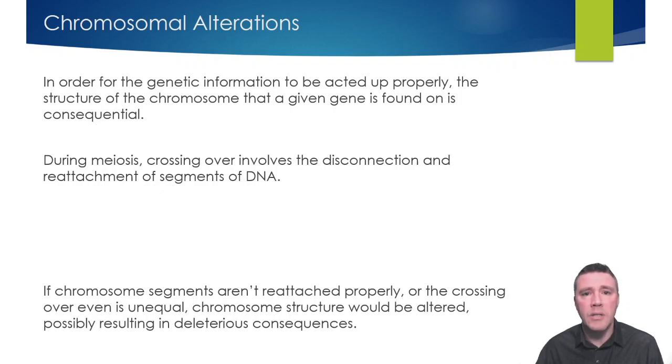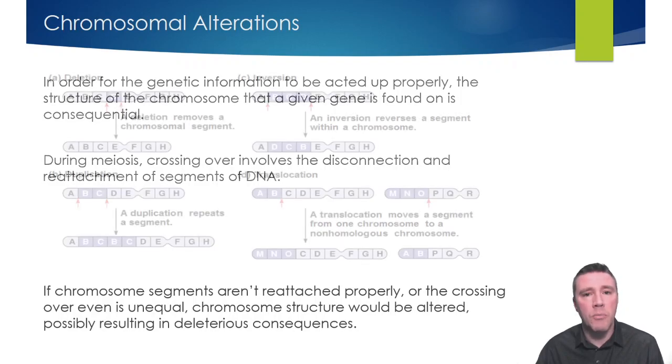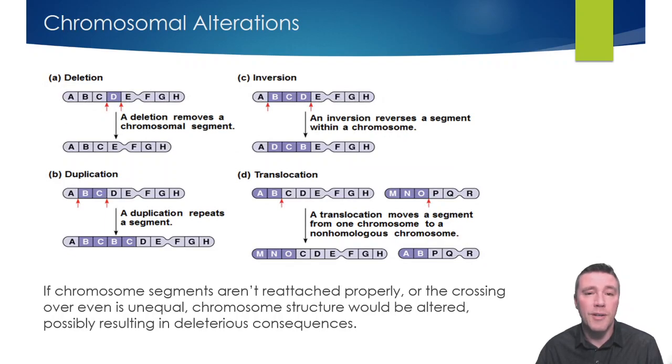Although we won't be going into the specific details of those consequences, let's take a look at the possible outcomes of chromosome alteration. Conveniently, many of the names of these alterations also describe what took place. It is important to keep in mind that these alterations are not small-scale, affecting only a few nucleotide base pairs. In reality, they can affect entire regions of a chromosome, meaning hundreds, thousands, or more nucleotide base pairs.